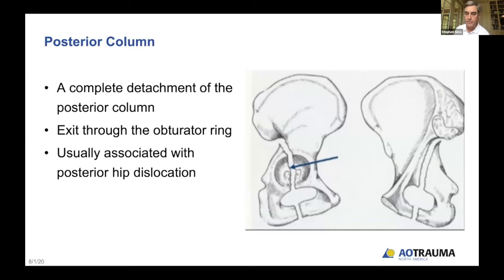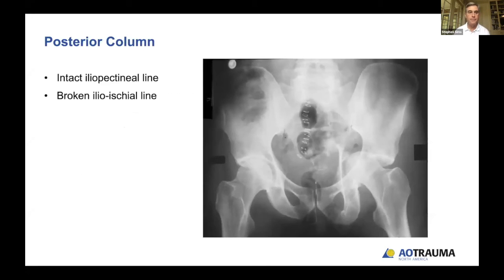If this fracture went very high up into the notch, the most superior portion could actually disrupt a small part of the superior iliopectineal line, even though it's a posterior column fracture. This is a classic posterior column picture with the hip dislocated following the posterior column. You can see the iliopectineal line is intact while the ilioischial line is clearly disrupted and the femoral head is dislocated with the posterior column.